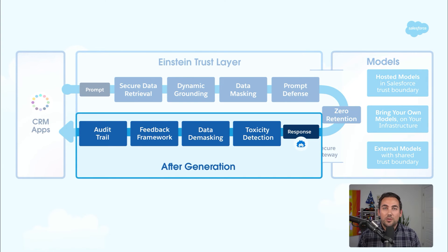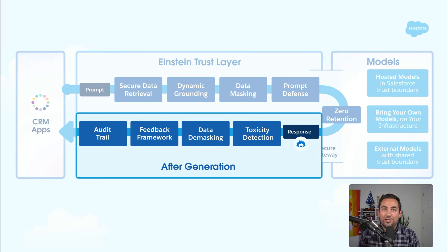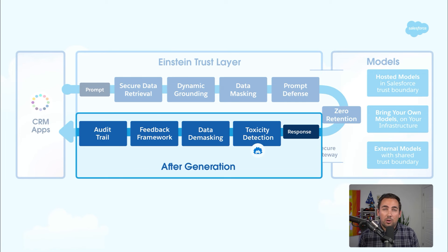Once the response has been generated from the LLM gateway, it's ready to present back to the user. But first, we want to take that response and ensure that it's safe — the first step of the after-generation process is toxicity detection. We're going to run it through our toxicity filter to ensure that there is no harmful content or negative language, and make sure that it's safe and secure for your users.